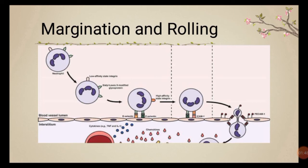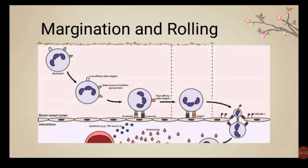Selectins are adhesion molecules: P-selectin is expressed on platelets and endothelium; L-selectin is expressed on leukocytes. The selectins bind oligosaccharide ligands. Normally, endothelial lining adhesion molecules are expressed in low-affinity form, but when a chemokine or cytokine activates the endothelial lining, they are upregulated and the leukocytes adhere.